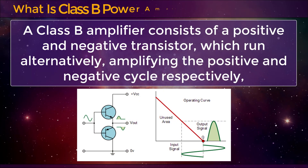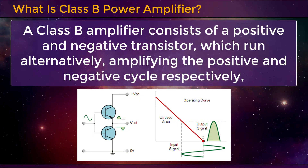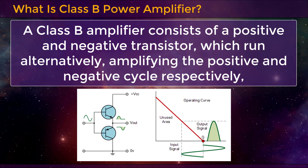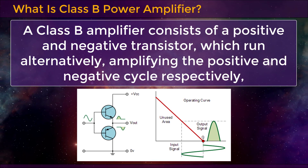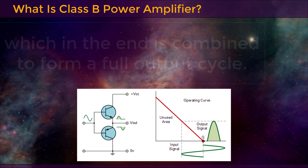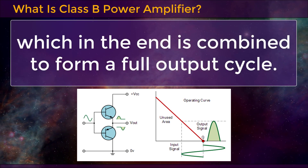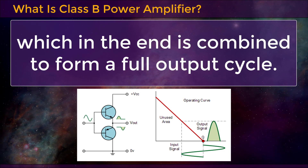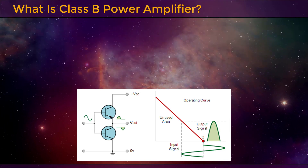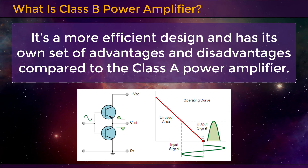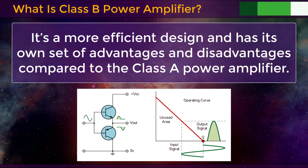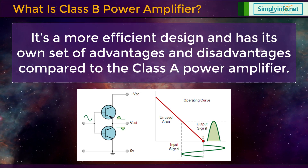A class B amplifier consists of a positive and negative transistor, which run alternatively, amplifying the positive and negative cycle respectively, which in the end is combined to form a full output cycle. It's a more efficient design and has its own set of advantages and disadvantages compared to the class A power amplifier.